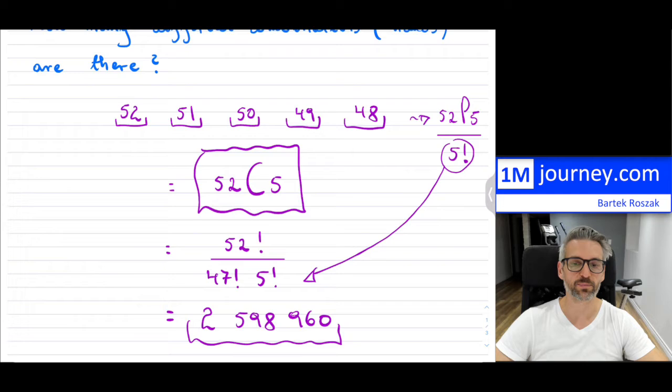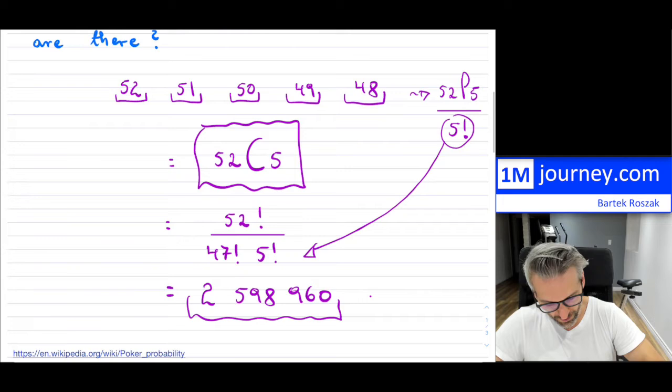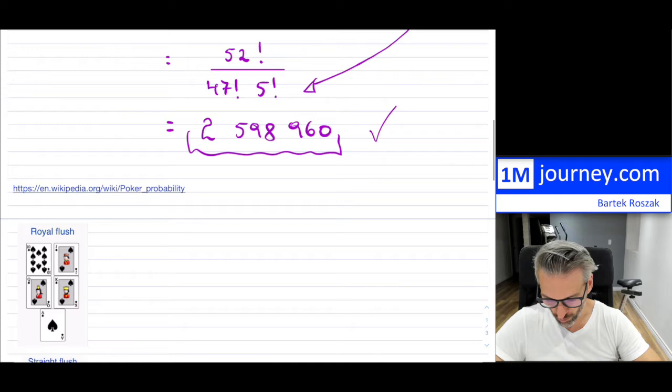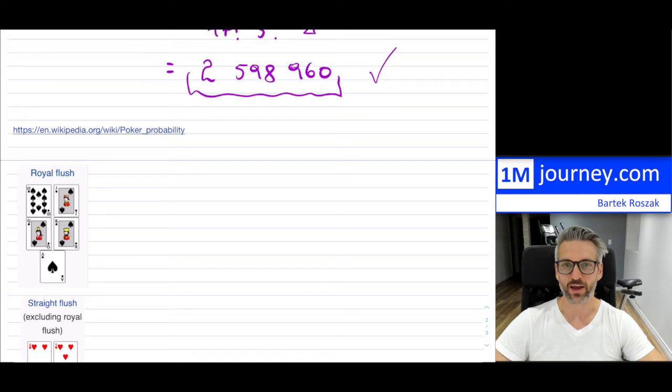We need the total number of hands if we ever want to find the probability of something. So that's the first step — we have our 52 cards and this is the total number of hands we might be dealt. Now it's worthwhile to understand what all of these poker hands are. I'm going to explain them, and then future videos will cover actually counting how many possibilities of each there are.